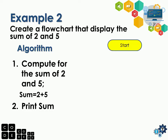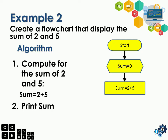We have the terminal block 'Start'. Next is the initialization block, which has 'sum is equal to 0'. In the initialization block, we're declaring that we need the variable 'sum' — it will hold the value of 2 plus 5. After that, we have the process block with the equation: sum is equal to 2 plus 5. After getting the sum, we use the output block to print the word 'sum'. Then terminal block 'End'.